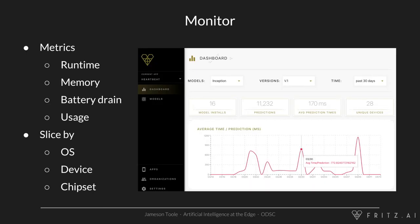Once models are out in the wild, you've got to monitor them the same way you'd monitor every other part of your application. Some of the metrics we really care about at Fritz are: how quickly is the model running on the device, how much memory is it using, how much is it draining the battery, and what is the usage — what are people really using things for, which you can get by looking at input data and the prediction labels coming out. You want to collect all of these metrics sliced by operating system, device, and chipsets. This allows you to figure out if things are going haywire. Putting alerts on distributions of predictions or input data can really make sure that your models are producing the desired user experience over time.